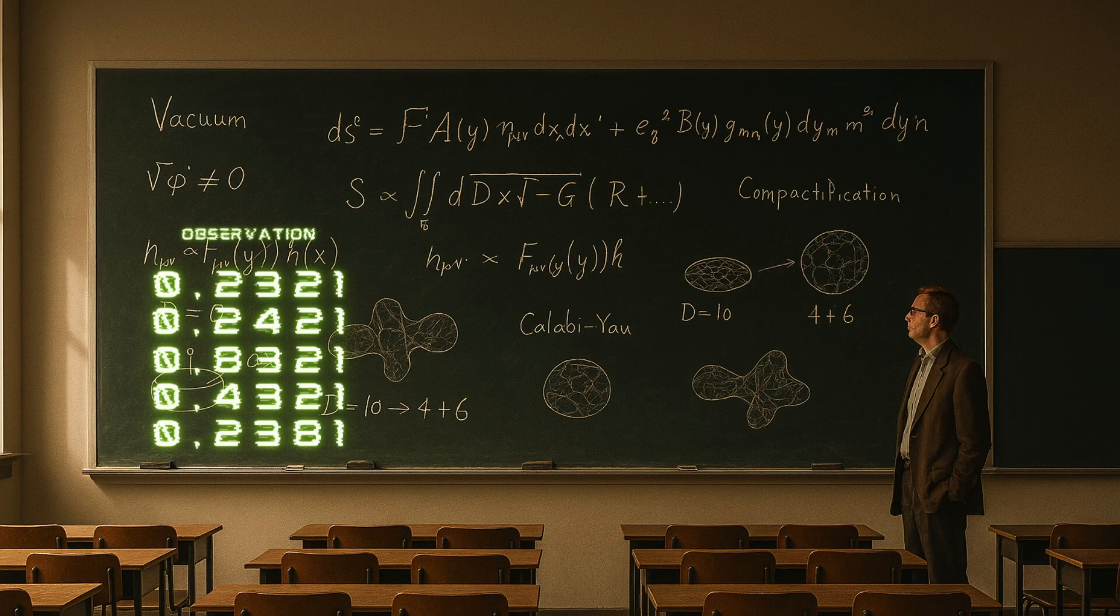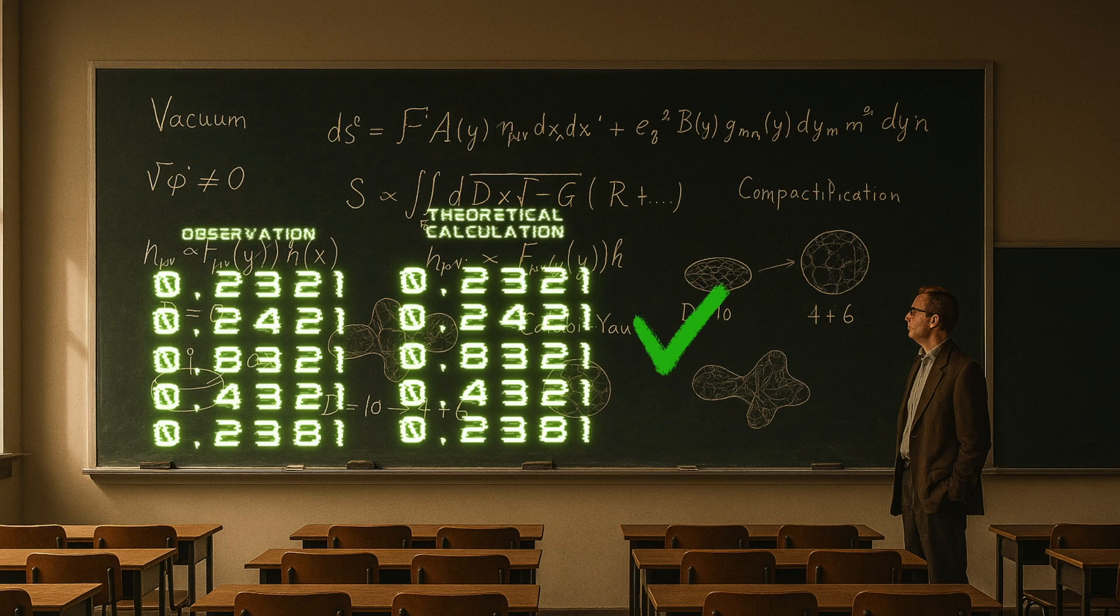As we explained at the beginning of the video, string theory proposes that the structure of space-time isn't fixed. It is itself subject to evolution. For that reason, dark energy cannot remain constant. As the universe grows, it should behave like a wave, spreading out and weakening.